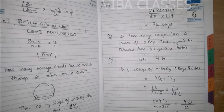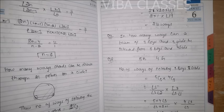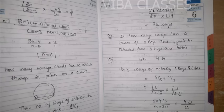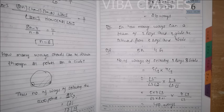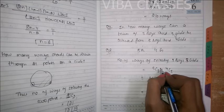Question number 4: In how many ways can a team of 3 boys and 3 girls be selected from 5 boys and 4 girls? There is a selection here and no arrangement required. There is a group with 5 boys and 4 girls. We have to choose 3 boys and 3 girls from that group, so we apply combination. Number of ways of selecting 3 boys and 3 girls: you need 3 boys from 5 and 3 girls from 4.